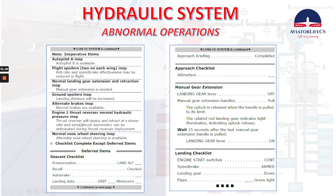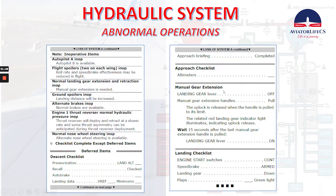Thrust reverser is still available but will deploy and retract at a slower rate and some thrust asymmetry can be anticipated during thrust reverser deployment. Normal nose wheel steering inoperative — alternate nose wheel steering is available. Checklist complete except deferred items. You have to complete your deferred items, the same checklist approach checklist. Then it comes to the manual gear extension: put the landing gear lever off.